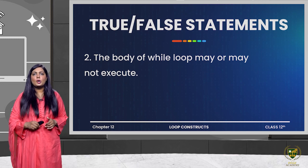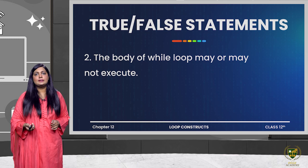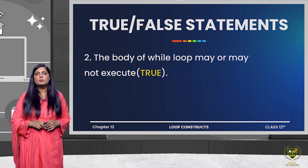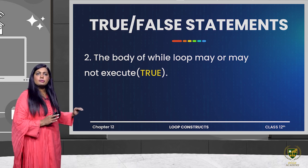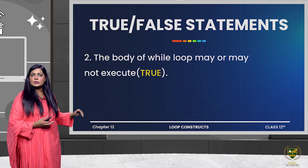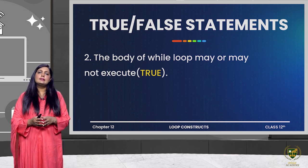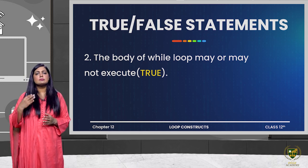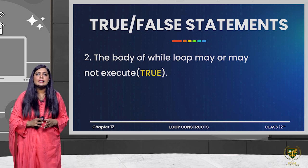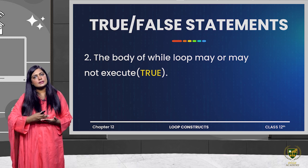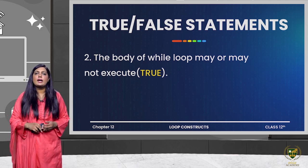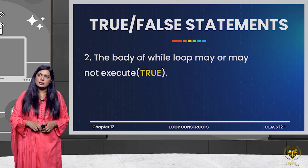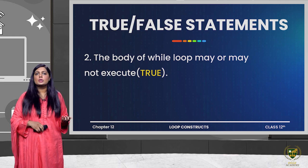The next question: the body of while loop may or may not execute — this is true. The body of the while loop will execute only when the condition is true. Looking at the while syntax, the only thing in the condition is the condition statement, meaning if the condition is true the program flow continues; otherwise it skips the body of the loop. So this statement is true — it may or may not execute; in the case of a false condition it will definitely not execute.